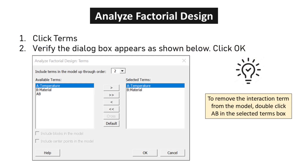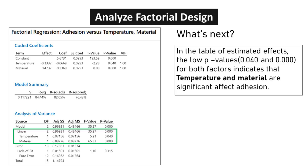To remove the interaction term from the model, double-click A*B in the Selected Terms box. Click Terms and verify the dialog box appears as shown. Click OK. In the Table of Estimated Effects, the low p-values of 0.040 and 0.000 for both factors indicate that temperature and material have a significant effect on adhesion, suggesting that both play a crucial role in determining adhesion properties.